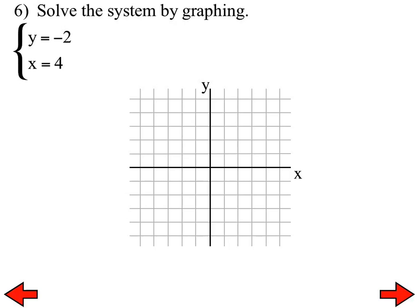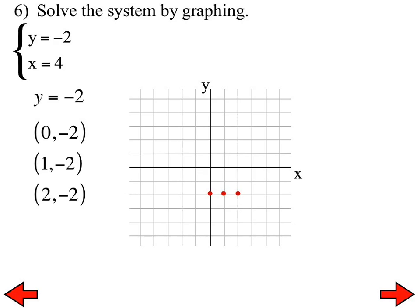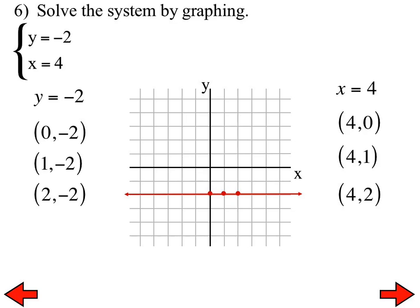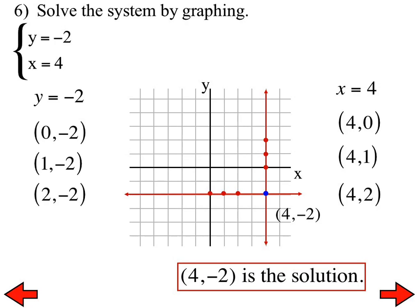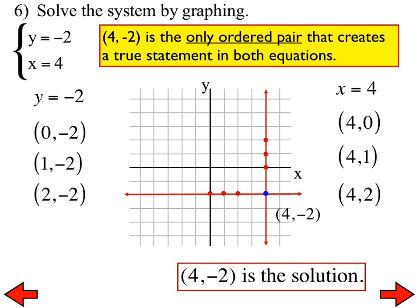Let's go to number 6 — this one should take a lot less time. Graphing the line y equals negative 2 means y is always negative 2, so it's a horizontal line. And x equals 4 means x is always 4 — any equation of the form x equals a constant is always a vertical line. Those two lines intersect at (4, negative 2), which is the solution to that system. It is the only ordered pair that creates a true statement in both equations.